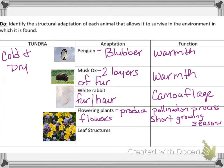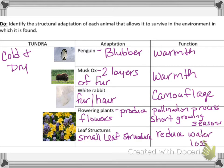On that same picture, there is the leaf structure — they have a small leaf structure. Its adaptation is to reduce water loss because when there's less surface area, there's less room for evaporation. There are fewer stomatas, so there's less water leaving.